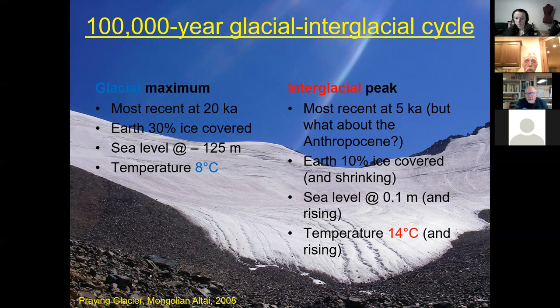We have about 10 percent of the land area of the world covered with ice right now. Sea level is at approximately its present value and has been that way for five or six thousand years. The mean temperature of the Earth is 14 degrees Celsius, headed for 15.